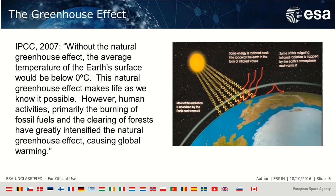From those early thoughts came this idea of the greenhouse effect. This is from the IPCC 2007: without the natural greenhouse effect, the average temperature of the Earth's surface would be below 0 degrees centigrade — in that calculation it was minus 6. This natural greenhouse effect makes life as we know it possible. However, human activities — primarily the burning of fossil fuels and the clearing of forests — have greatly intensified the natural greenhouse effect, causing global warming.